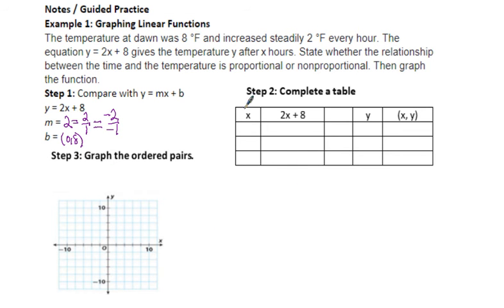We're going to fill in this table. Let's use negative 2, 0, and randomly let's use 4. We're going to go 2 times negative 2 plus 8. That's how we fill in the table. 2 times negative 2 is negative 4. Negative 4 plus 8 is 4. Then we take our x and our y and make them a point: negative 2, 4.